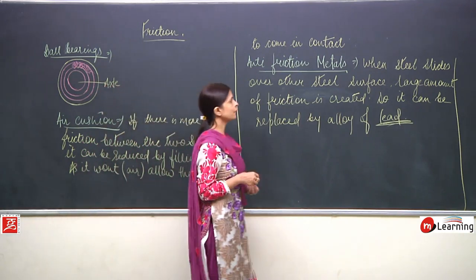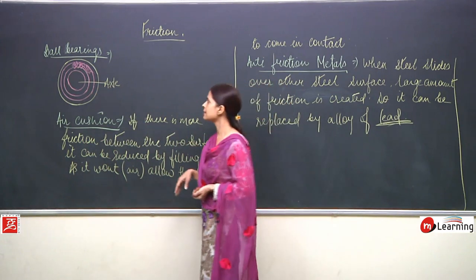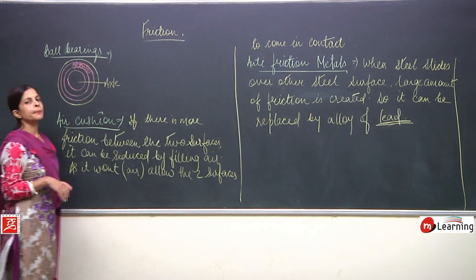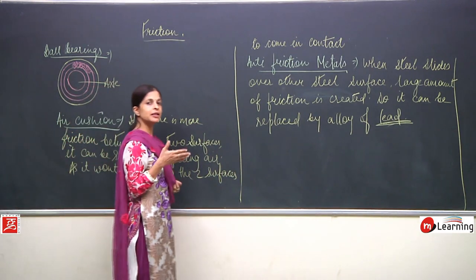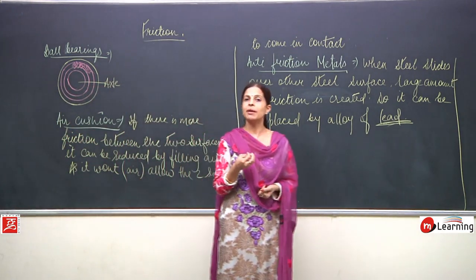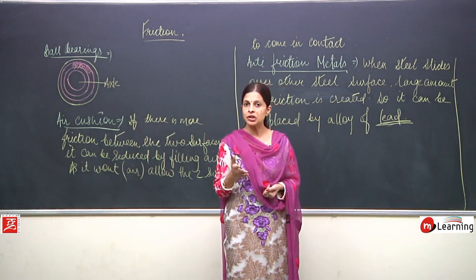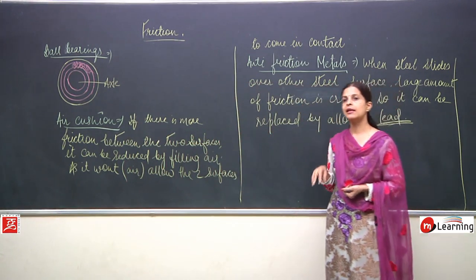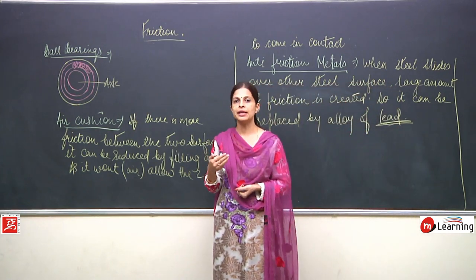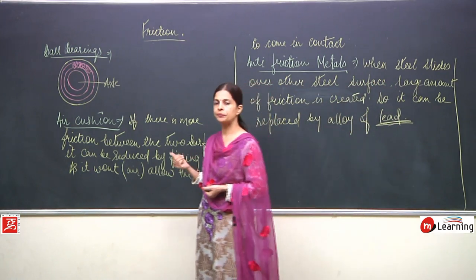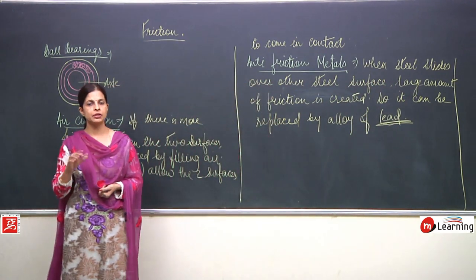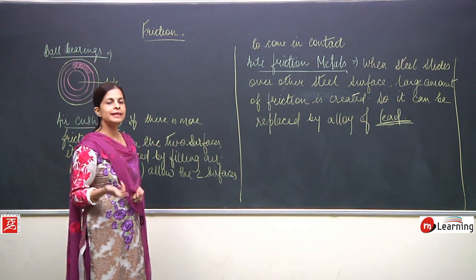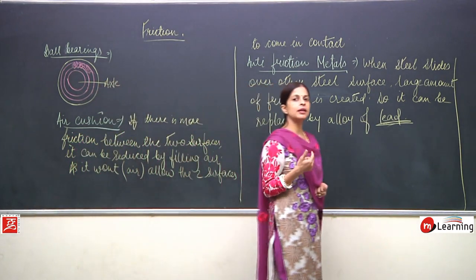So we have discussed all the methods: ball bearings, air cushions, and anti-friction metals. By making changes in shape using streamline shape, by adding lubricants, by polishing surfaces, by use of ball bearings, by using circular surfaces, by filling air between surfaces where friction exists, and by use of anti-friction metals — all these are ways how friction can be reduced.